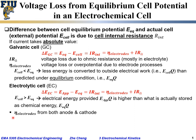Regarding η_electrodes — the voltage loss or overpotential for electrode processes — it can come from both the anode and the cathode, since an electrochemical cell always contains at least two electrodes: one anode where the oxidation half-cell reaction occurs, and one cathode where the reduction half-cell reaction occurs. Both anode and cathode processes contribute their voltage losses to the total η_electrodes overpotential. Therefore, η_electrodes can be separated into the anode overpotential and the cathode overpotential.